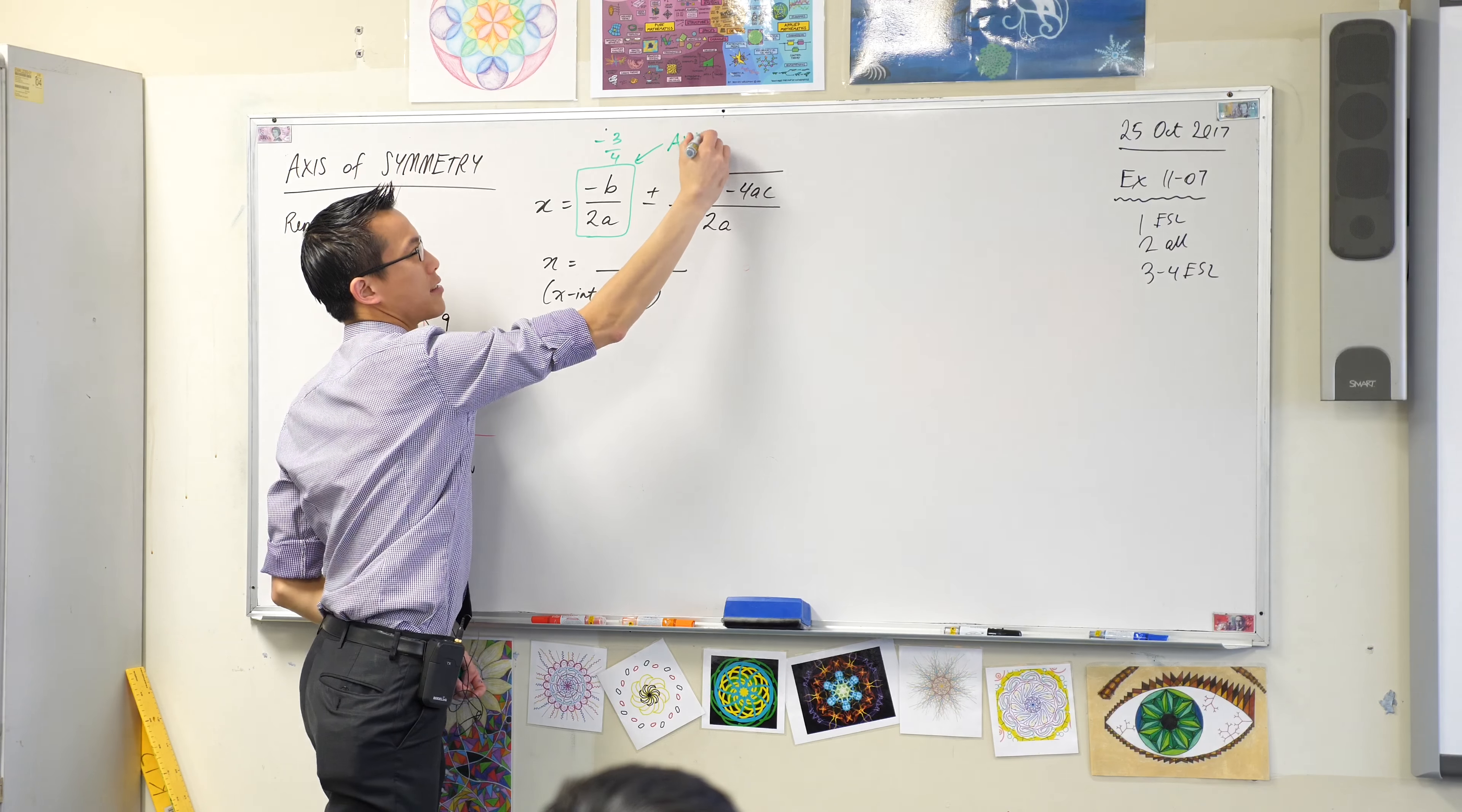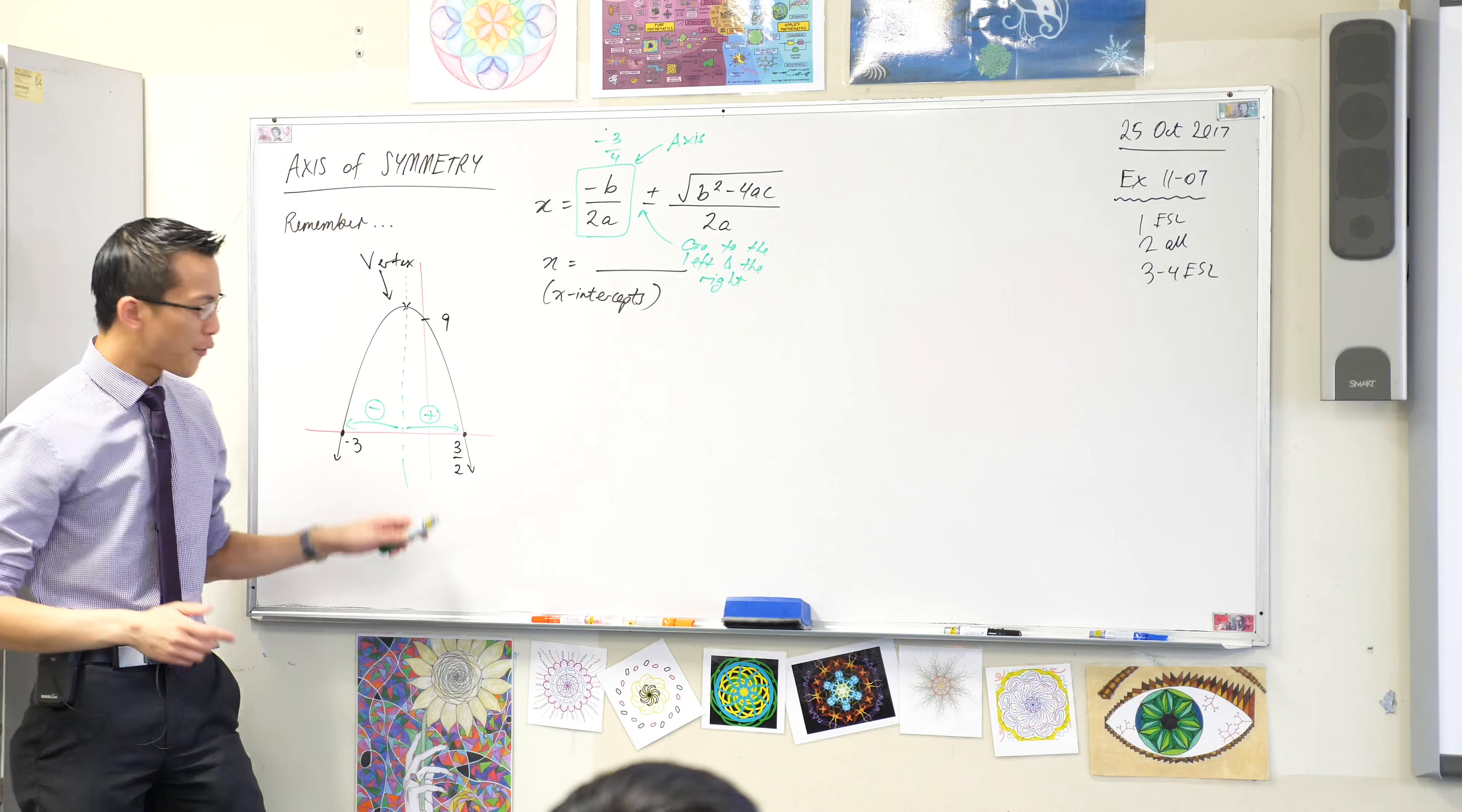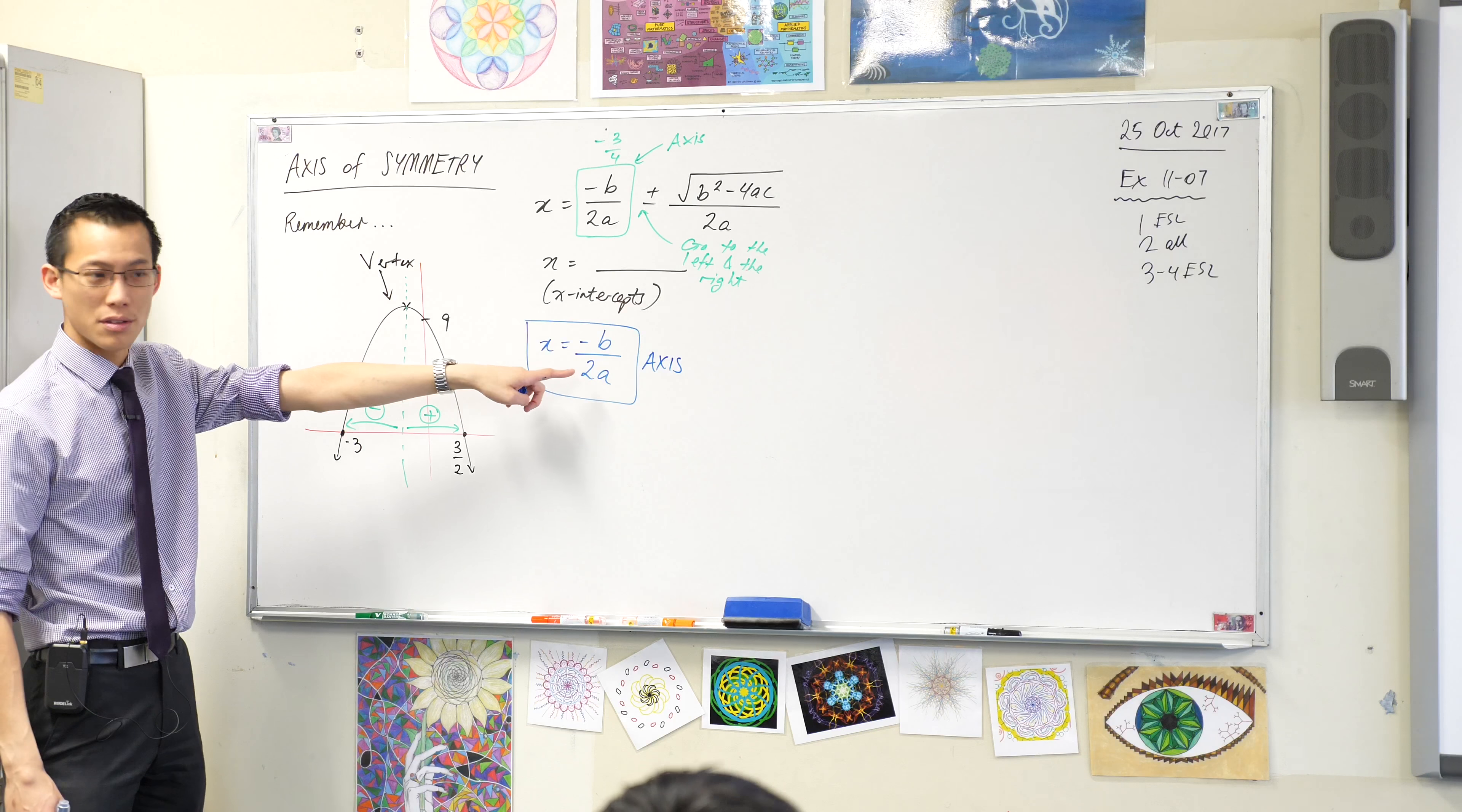There is the middle. This is the axis. And this tells you, go to the left and the right. If you go the same distance away, this distance here that I've drawn in green, you get to your x-intercepts on either side. So therefore, what we can take from the quadratic formula is, x equals just the front part. Just that guy. That is the axis. So if you want to find the middle of the parabola, this part here, you punch in these numbers.